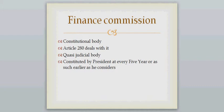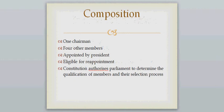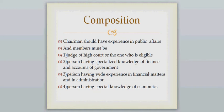The Finance Commission consists of five members — one chairman and four other members — appointed by the President. They are eligible for reappointment. The Constitution authorizes Parliament to determine the qualification of members and their selection process. So who will be members, what qualifications they need, and what work experience is required — all this is decided by Parliament, not the President. The President just appoints them.